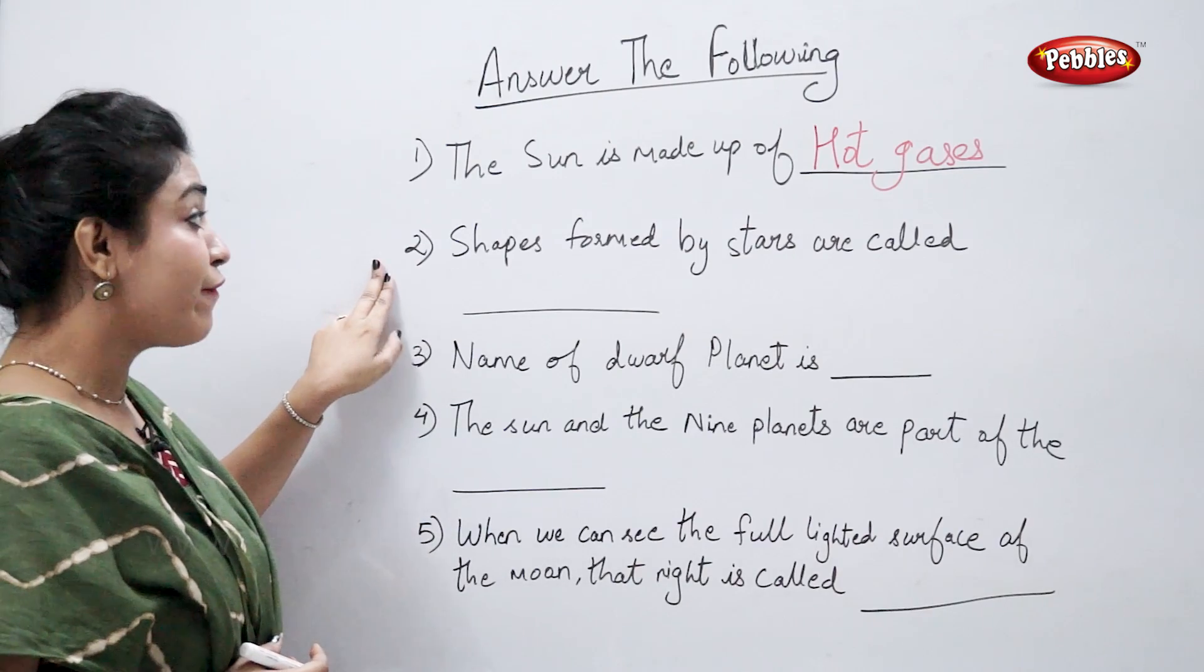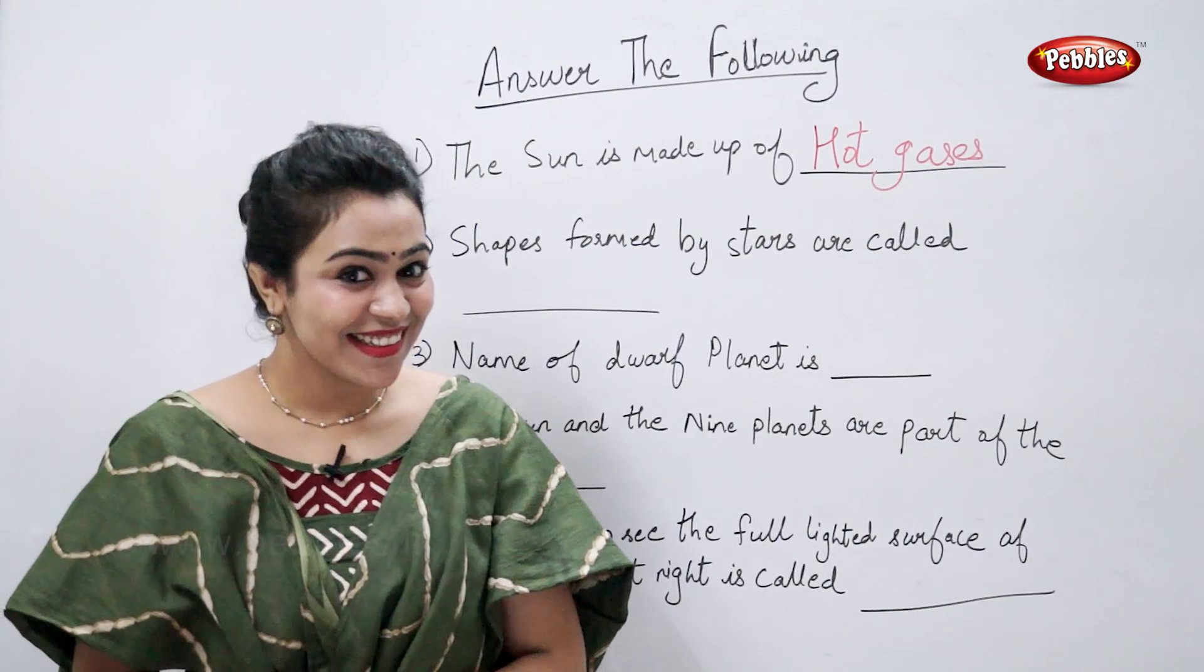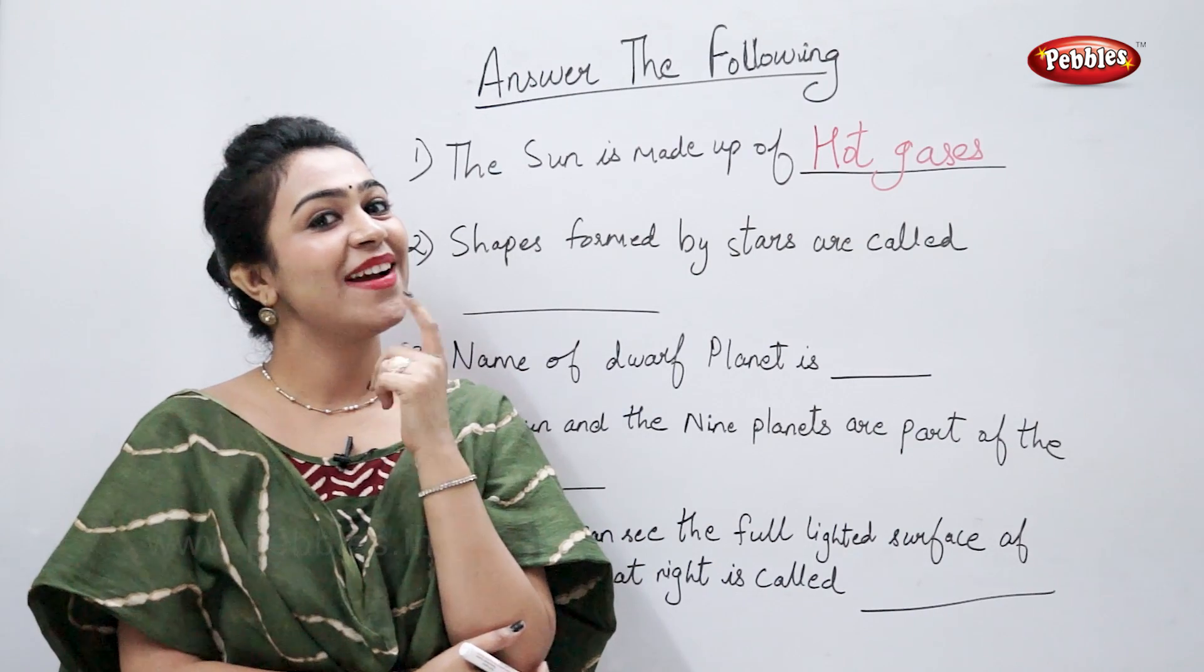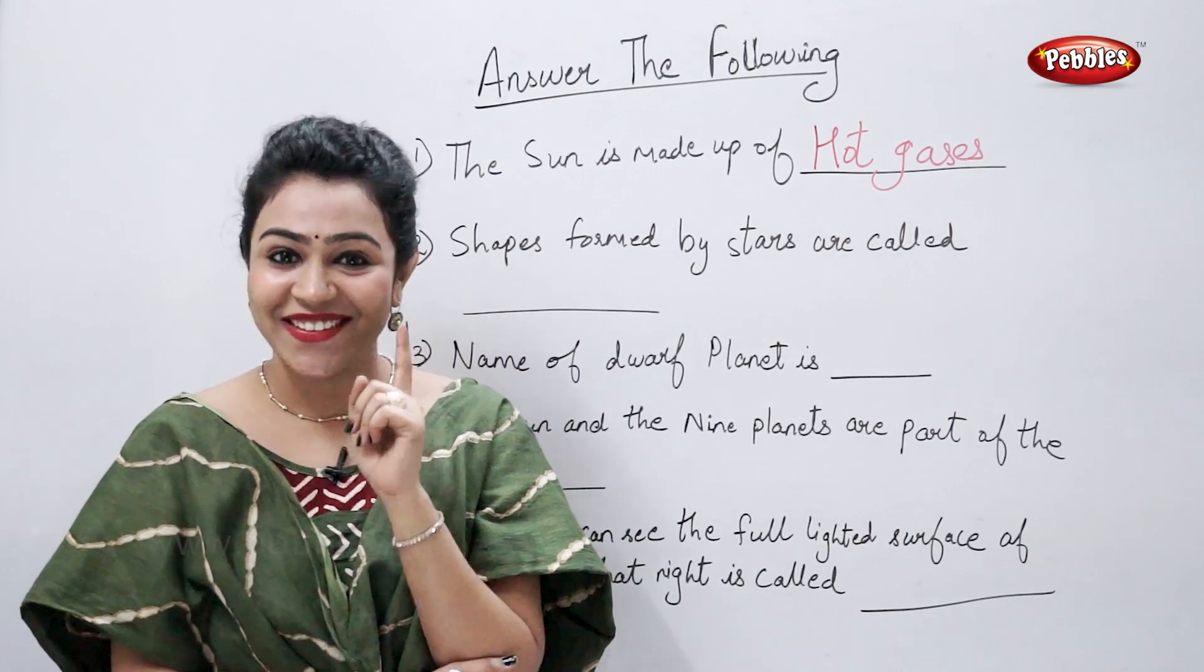Shapes formed by stars are called, constellations, right.